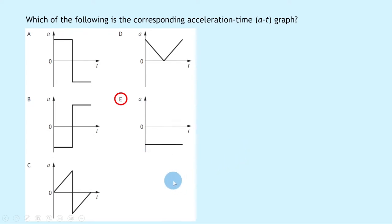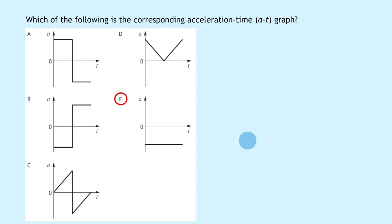It's going to be a constant negative acceleration, so our answer is E — a horizontal line showing a constant negative value. For an object thrown upwards on Earth, that value is minus 9.8 m/s², which is the acceleration due to gravity.